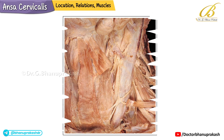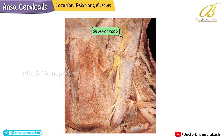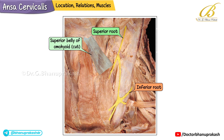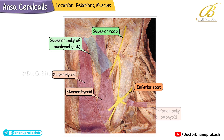The superior root gives a branch to the superior belly of the omohyoid, while the Descendens loop supplies the sternohyoid, sternothyroid, and the inferior belly of the omohyoid. In this dissection the termination of the thoracic duct can also be seen.